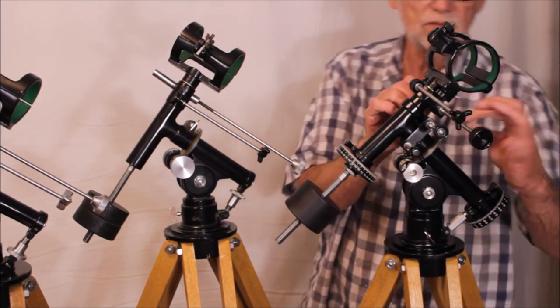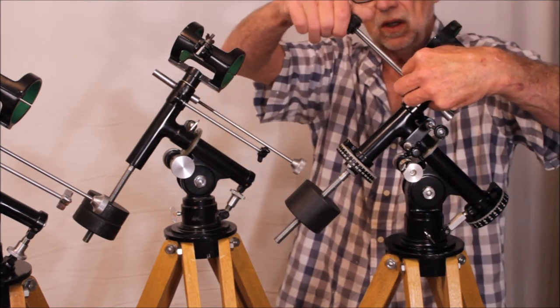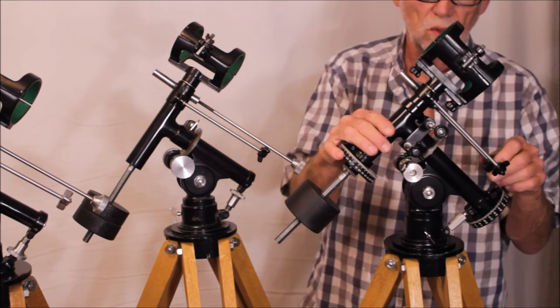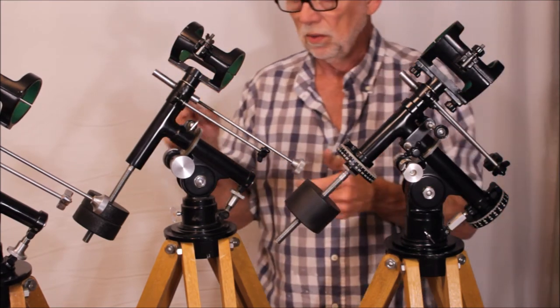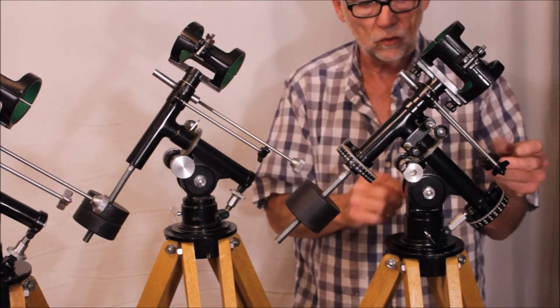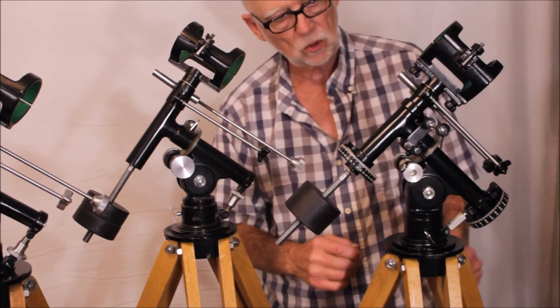These knobs are both plastic and I think that's correct. This also has a finer thread here. The slow motion, the declination slow motion, it's not quarter inch 20 anymore like it was on the old ones. This one and this one both have much finer threads there to give you a little bit finer control on the declination slow motion.